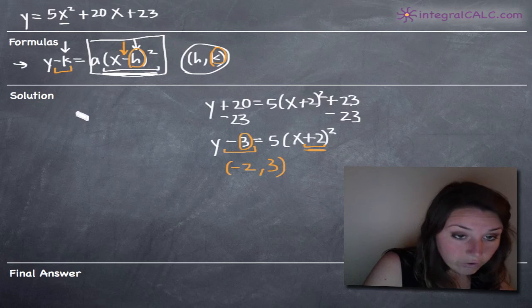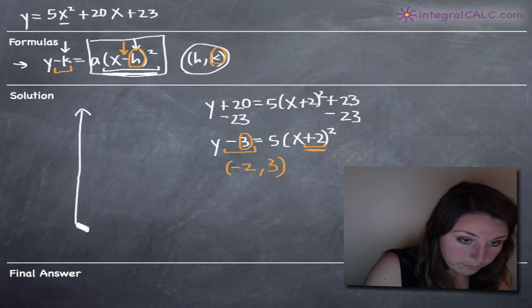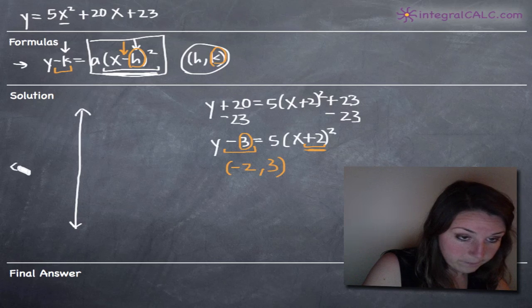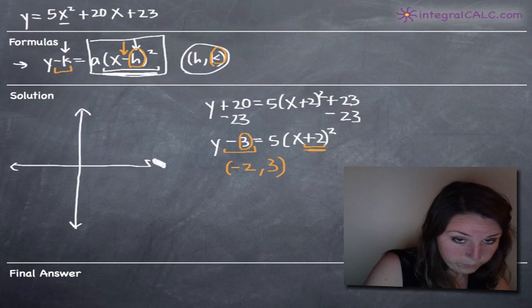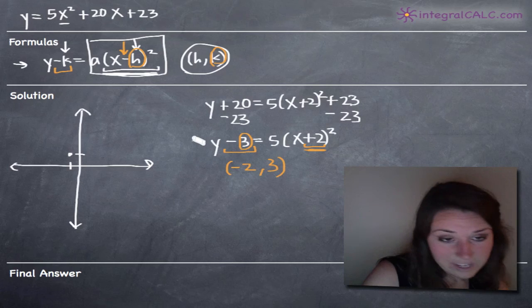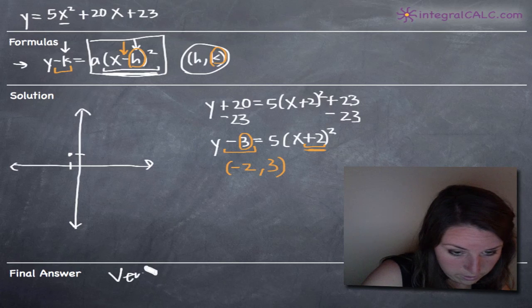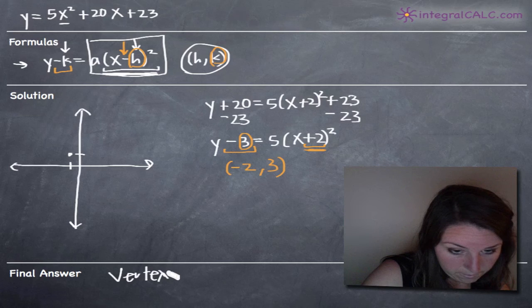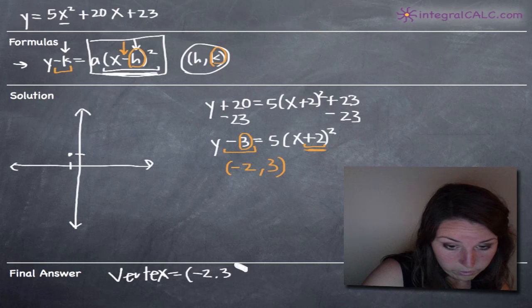So if we're going to graph this, let's go ahead and put these on coordinate axes here. I don't want to give myself a good amount of room. So let's call this negative 2, 3 right there. So that's going to be the vertex. We'll say this: Vertex equals negative 2, 3.